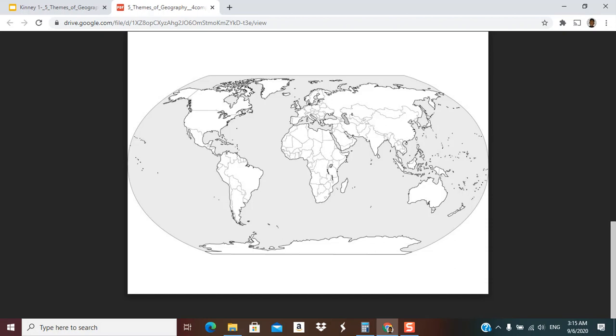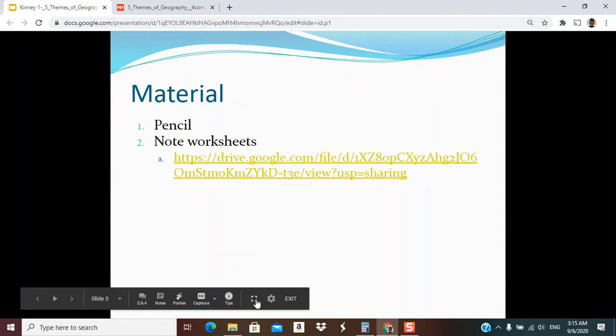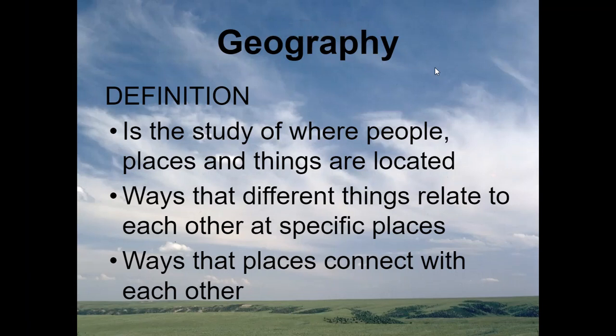So geography. Let's look at geography. The definition of geography: geography is the study of where people, places, and things are located, the way that different things relate to each other in specific locations, and ways that places connect with each other.